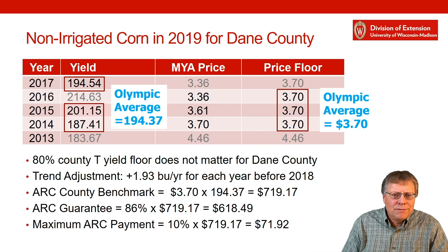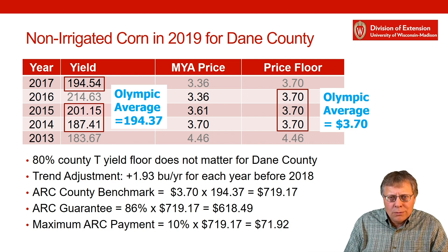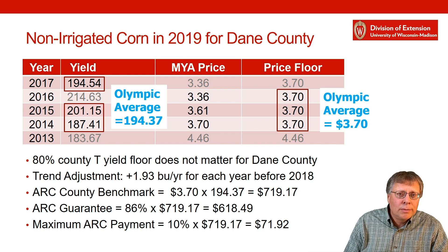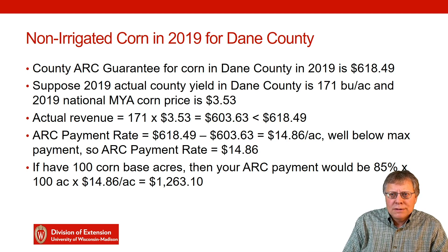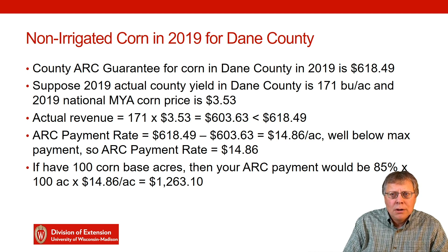From a farmer's perspective, you don't have to get deeply involved in making that guarantee calculation. Those guarantees are all available — you can look up your county by working with your FSA office or others who know where to find them. So once you have that guarantee, let's go with the one we have here: $618.49 per acre for Dane County in 2019.